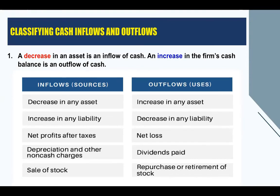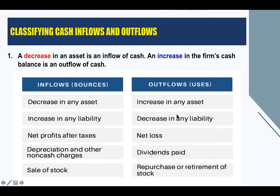In classifying cash inflows and cash outflows, there are four main points. Number one: a decrease in an asset is an inflow of cash, and an increase in an asset is an outflow of cash. Any decrease in an asset is a cash inflow. An increase in any liability is a cash inflow. Net profits after taxes is a cash inflow. Depreciation and other non-cash charges is also a cash inflow, and so is sale of stock. Cash outflow results when there is an increase in any asset, a decrease in any liability, net loss, dividend payments to shareholders, repurchase of stocks, or retirement of stocks.